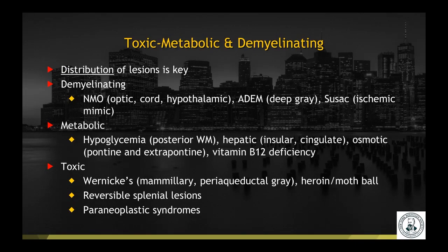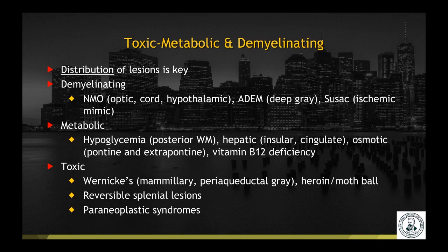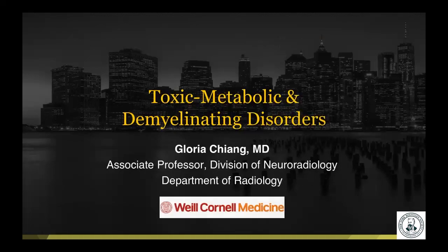In conclusion, toxic metabolic and demyelinating disorders are a very big topic, but distribution often helps you come to the right diagnosis. For demyelinating disease, remember NMO spectrum disorders, the antibodies against aquaporin-4 as well as MOG, and the demyelinating mimic Sussac syndrome. With metabolic disorders, history and labs in addition to imaging distribution can point you in the right direction. With toxic disorders, history is often very helpful. Remember that reversible splenial lesions can occur with a whole host of clinical entities and are not specific. Also remember paraneoplastic syndromes. Thank you very much for your time.